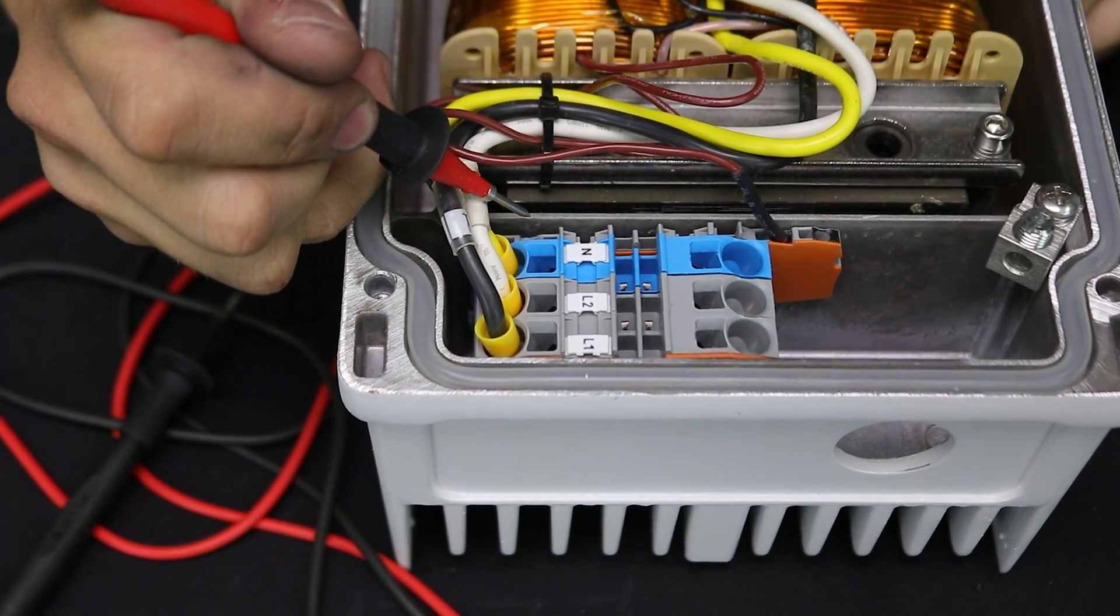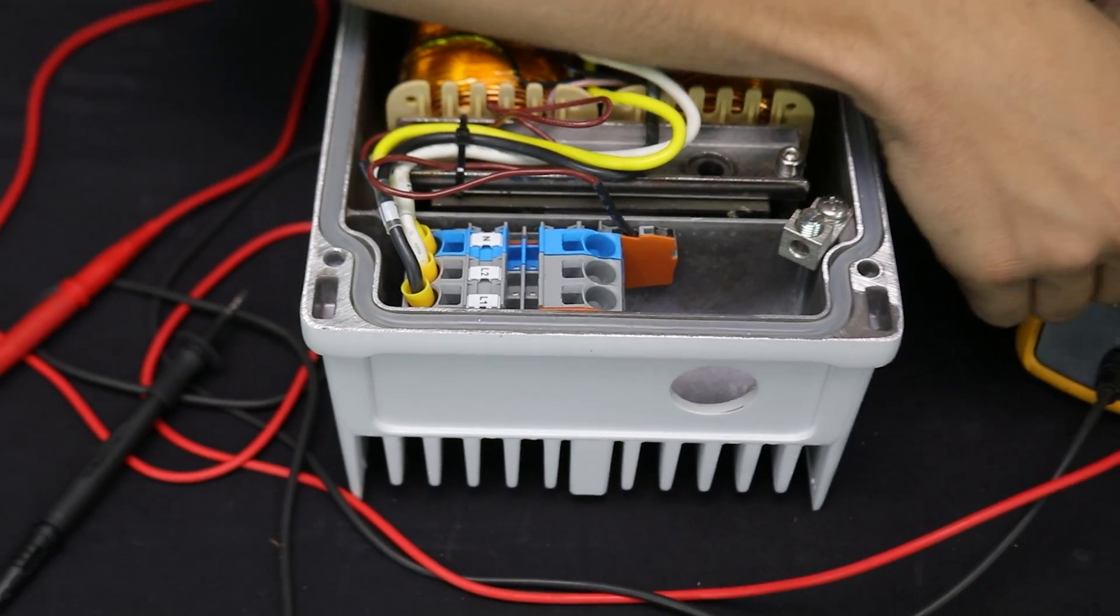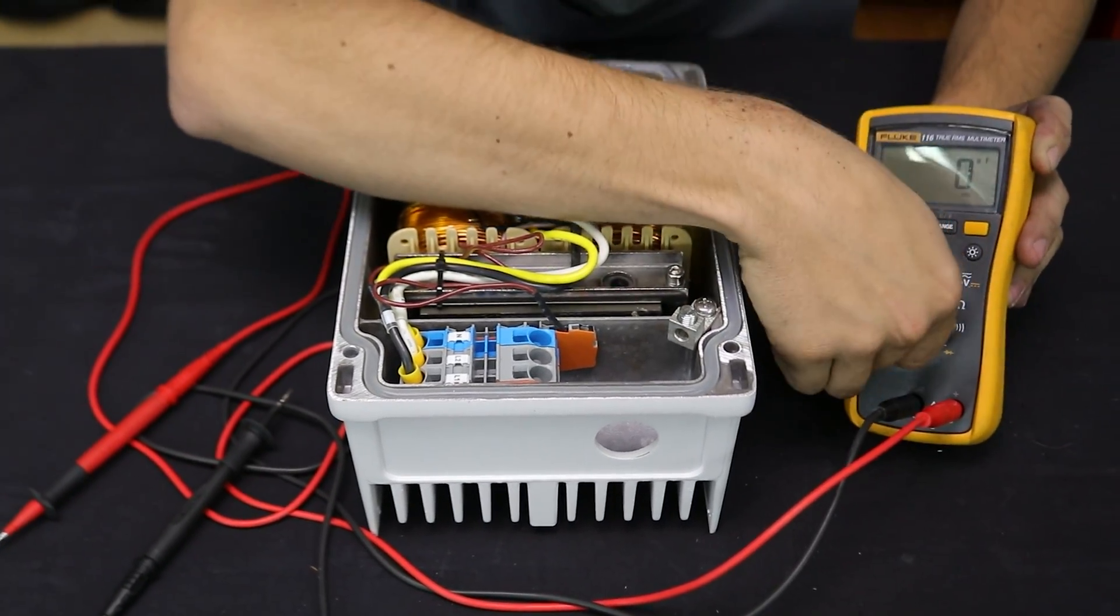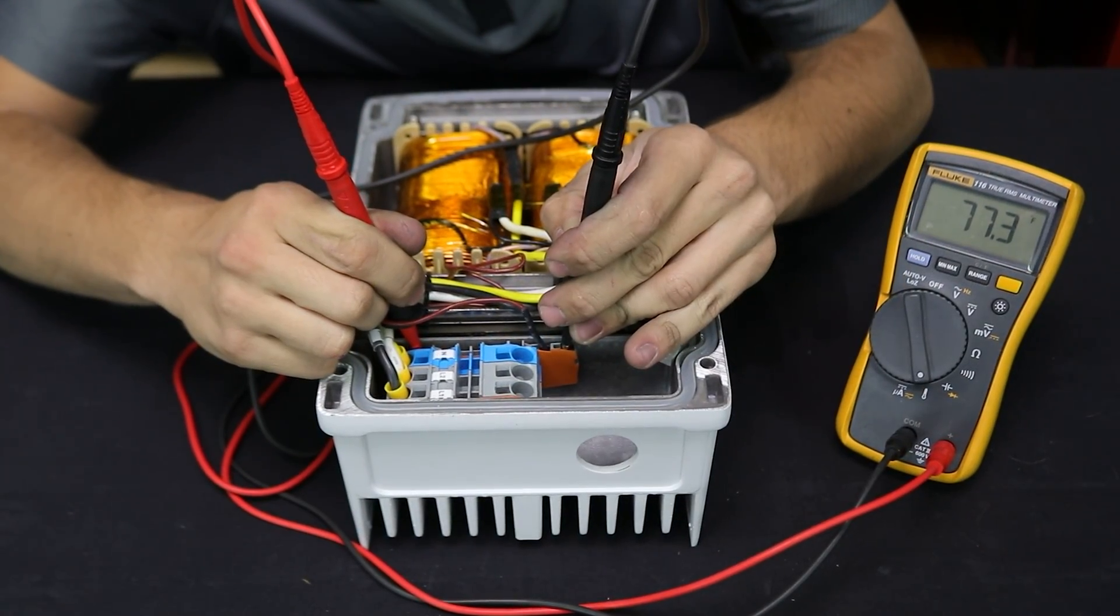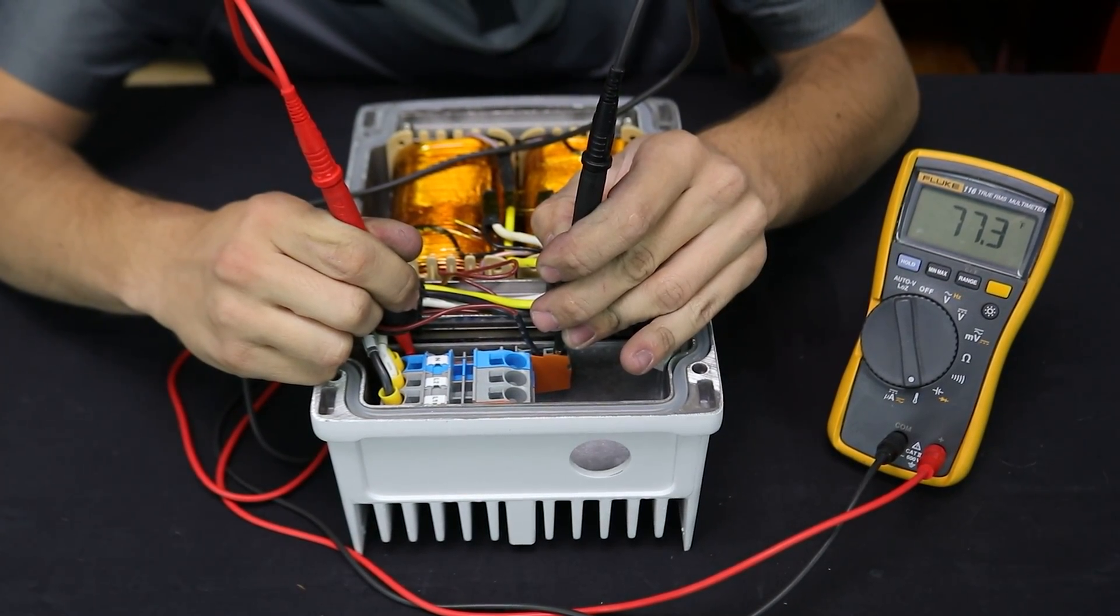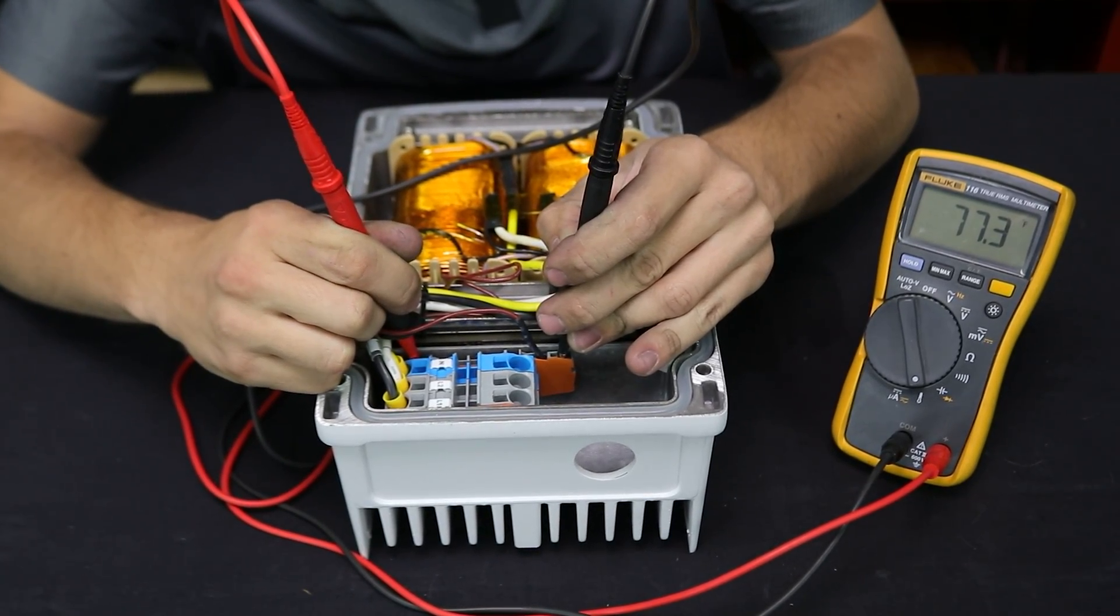It has another small terminal block here and I'm actually going to turn my multimeter to the temperature probe setting and if I probe across these two terminals, you can see that it's reading 77.3 degrees Fahrenheit and that's accurate. That's the temperature of the core, so that's a very nice feature.